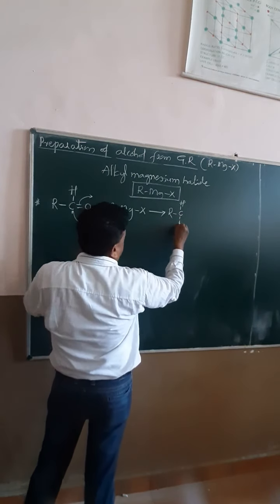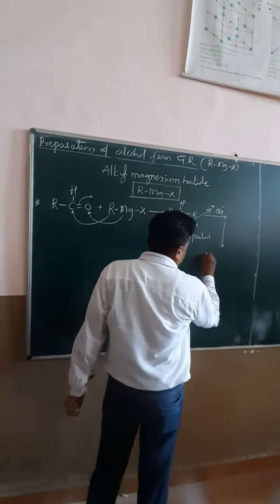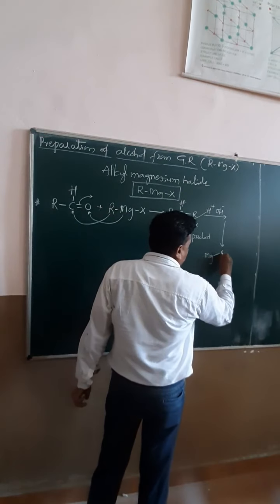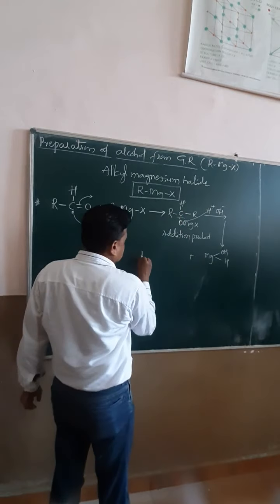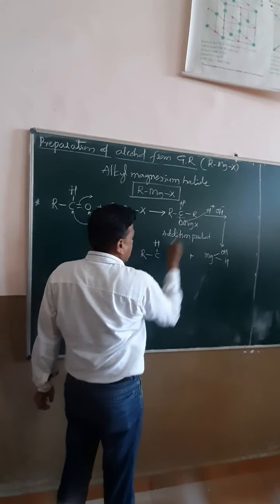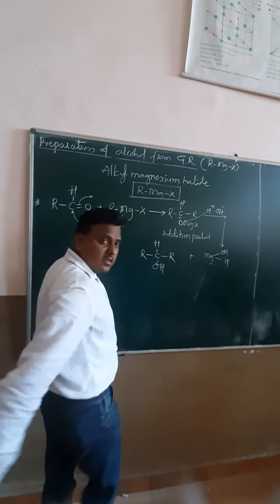This addition product is commonly called a magnesium salt. This magnesium salt undergoes acid hydrolysis to form a product. The cleavage of this bond, with hydrogen attaching, gives O-H and MgX as byproducts. Along the way, R-C-H with O-H attacking gives us the alcohol. The O-H group is attached to the first carbon having only one hydrogen atom.